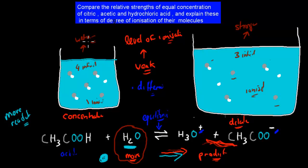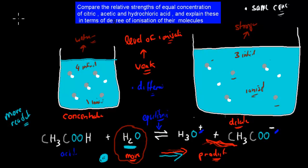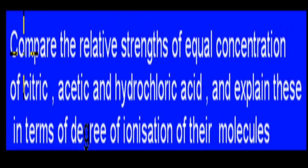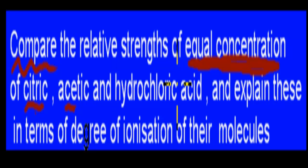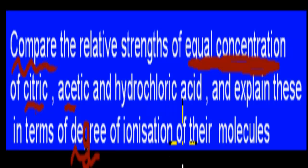That's one of the reasons why, if we want to test different acids, we keep the same concentration — because different concentrations can distort the weakness or strength of the acid a tiny bit. The question asks us to compare the relative strengths of equal concentrations of citric, acetic, and hydrochloric acid, and explain these in terms of the degree of ionization of their molecules.